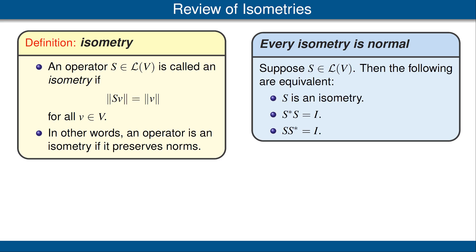Let's also review a result from a previous video. Suppose S is an operator on V. Then the following three conditions are equivalent. First condition: S is an isometry. Second condition: S star S equals the identity operator. Third condition: S times S star is equal to the identity operator.